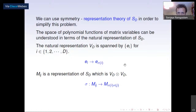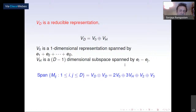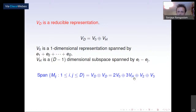From a representation theory point of view, V_d is a reducible representation with a one-dimensional invariant subspace and a (d-1)-dimensional irreducible invariant subspace. The tensor product V_d ⊗ V_d is also reducible, containing four different irreducible representations: V_0, V_H, V_2, and V_3, with multiplicities — V_0 appears twice and V_H appears three times in the decomposition.